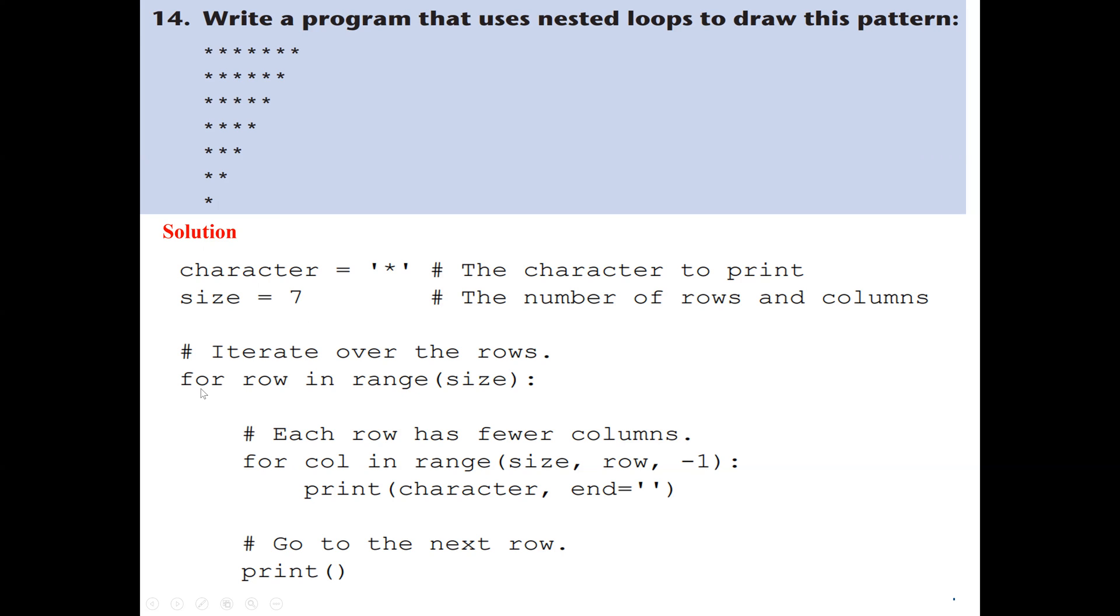This is our outer loop for the rows. For row in range size, where size is seven, we go from zero to six, which is seven iterations. In the first row, we go to the inner for loop for the columns. The column range is size minus row.